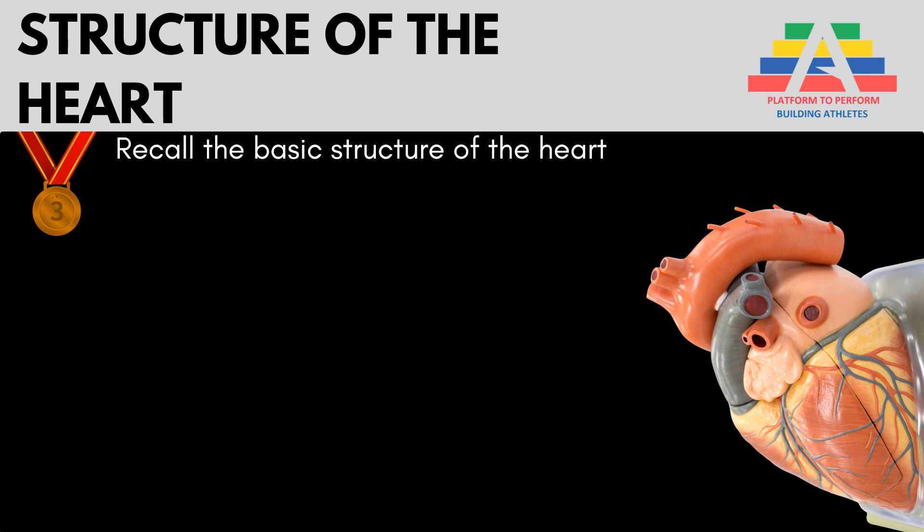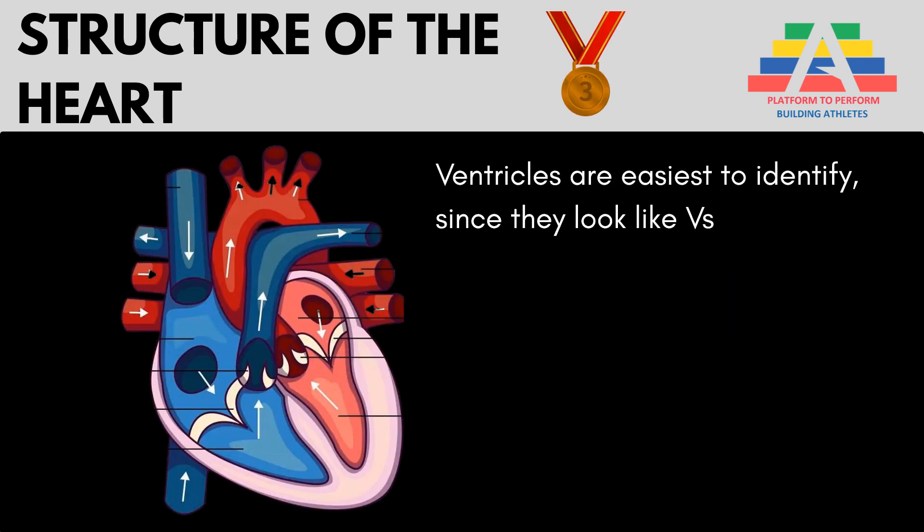The bronze objective is to recall the basic structure of the heart. The easiest starting point when labelling the heart is to identify the ventricles, because it kind of looks like you could slot a V in the place of them. We've got the left ventricle, which weirdly is actually on the right-hand side of a diagram, and the right ventricle on the left — because diagrams typically show the heart as if we're looking at someone else's heart. A giveaway is that the left ventricle is the thickest of the four chambers.